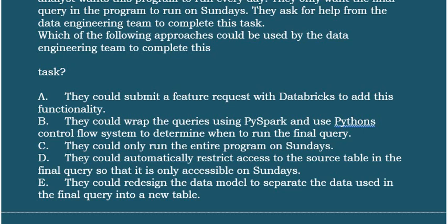Option C: They could only run the entire program on Sundays. Option D: They could automatically restrict access to the source table in the final query so that it is only accessible on Sundays. Option E: They could redesign the data model to separate the data used in the final query into a new table.